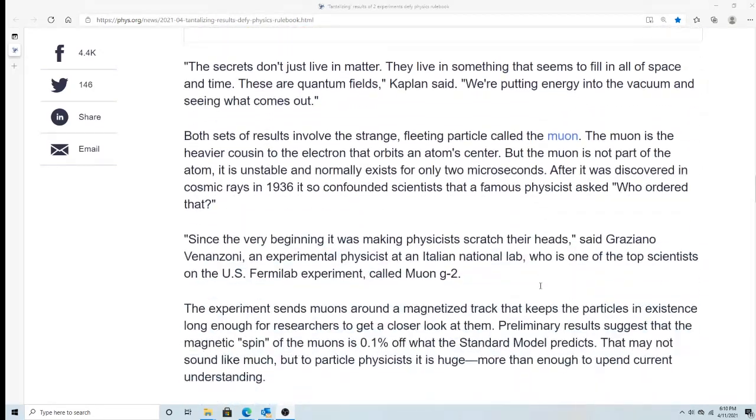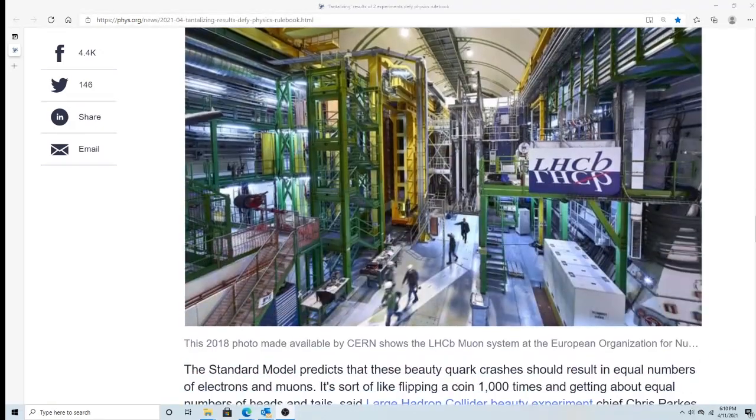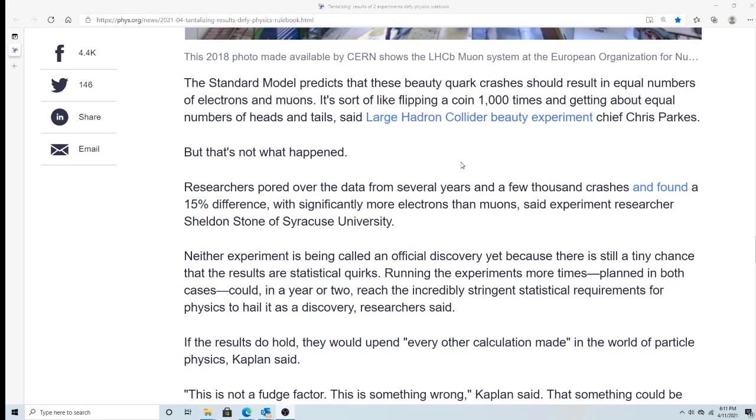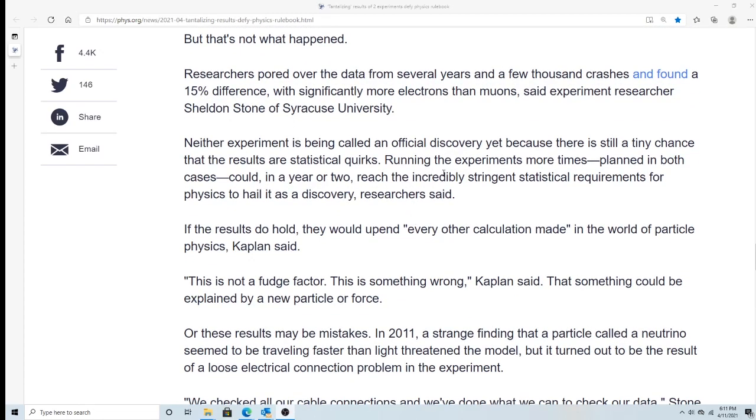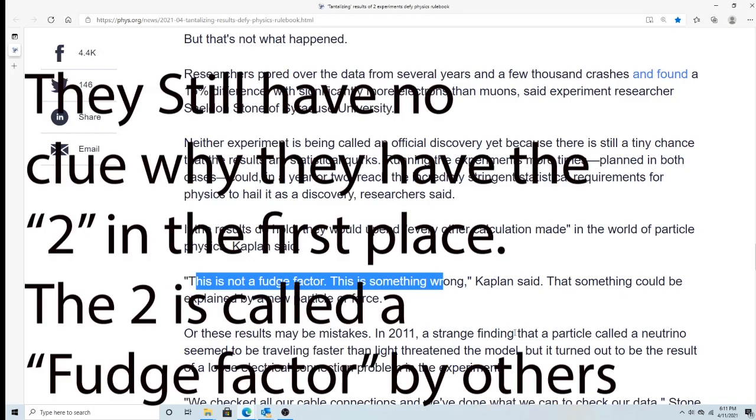They talk about really exotic things like beauty quark crashes. Neither experiment official discovery yet because there's still a tiny sense of statistical quirks. All they're coming up with is a fudge factor to a fudge factor. In their equations they have this factor called G. G has the value 2 but it's not perfectly 2, it's like 2.000 something. That little something is what they're trying to quantify.